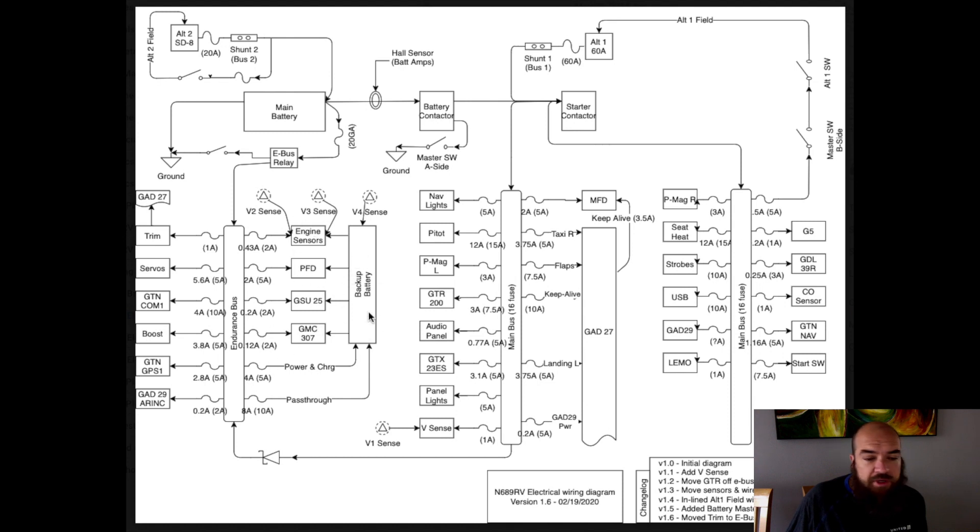But yeah, so here is the electrical system. The reason for all this redundancy is I do fly myself and my wife in instrument conditions in this aircraft, and we do go on long trips. And I wanted some redundancy. It is a fully electrical system. We wanted to make sure that if there are electrical issues, there's redundancy and you can get out of IMC.